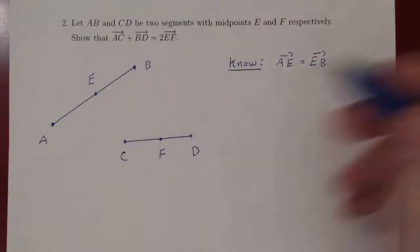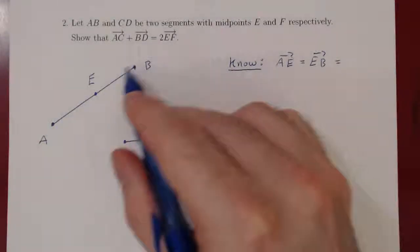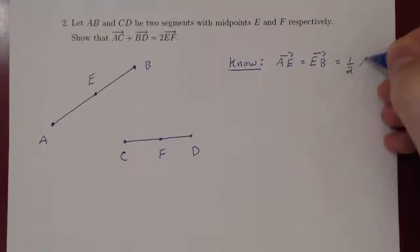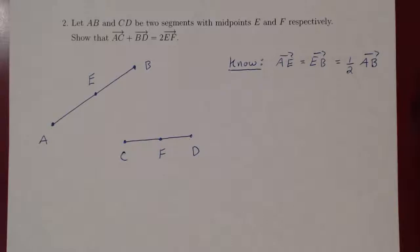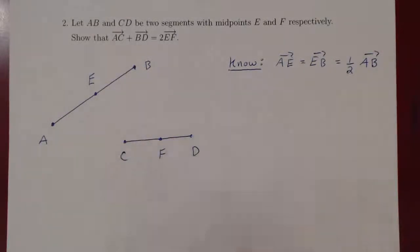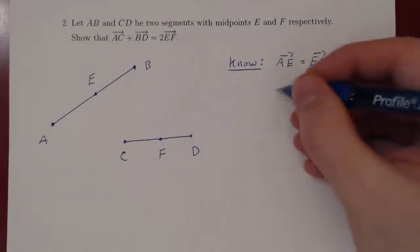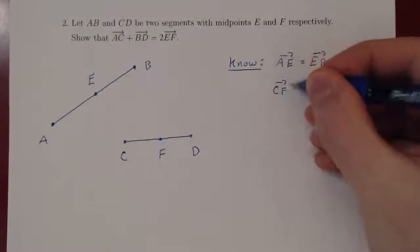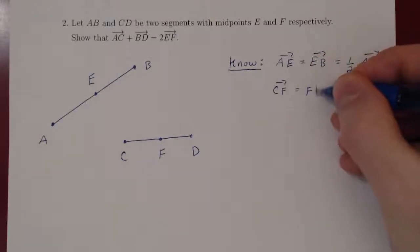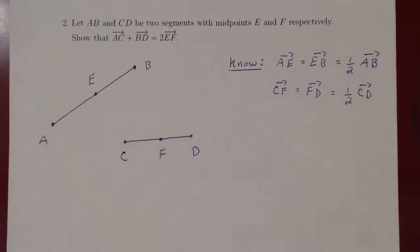You could also write this as AE equals EB, which also equals a half of vector AB. That's equally true. So this equality of vectors captures the fact that E is the midpoint of segment AB. Well the same goes for CD and F being the midpoint of that segment. So the vector CF has to equal the vector FD, which in turn has to equal one half of vector CD. And that's all we know.